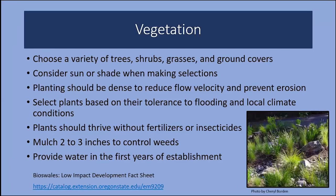Now for plant selection — my favorite part. You'll need to select a variety of trees, shrubs, grasses, and ground covers. The planting should be dense to reduce flow velocity and prevent erosion. Plants chosen should be tolerant of flooding and respond well to local climate conditions — for that simple reason, native plants are often the best consideration. Plants should thrive without the use of fertilizer, herbicide, or insecticide, because after all, that's what we're attempting to filter out.